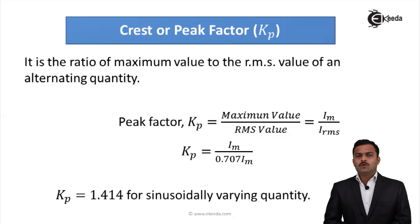So peak factor is 1.414 for sinusoidally varying voltage or sinusoidally varying quantity. These are the two fixed constant factors associated with AC quantity. Thank you.